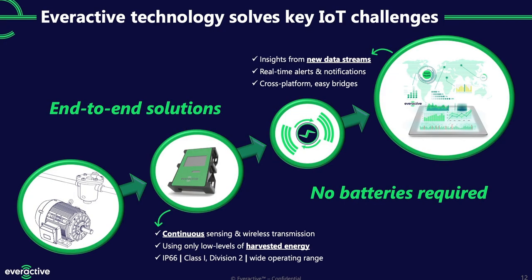Our sensors continuously sense and transmit wirelessly using harvested energy — that's why we call them batteryless. They're designed for industrial environments: IP66-rated for protection against fluids, water, and dust ingress. They're Class 1 Division 2 for intrinsic safety in explosion-risk areas, with a wide operating range for harsh process facilities. We have customers in food production and oil and gas where sensors have survived acid wash. This isn't off-the-shelf hardware — it's been designed from the ground up for environments where you find steam systems indoors and outdoors.